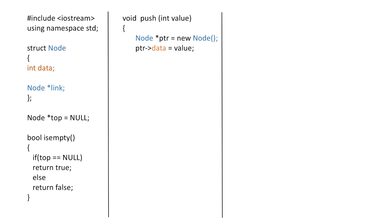We will make the link part of the node equal to top, and finally we will move our top pointer to this newly created node by equating it to ptr, which means this new node is now the starting of our linked list and the topmost element in our stack. Next we will create the pop function.